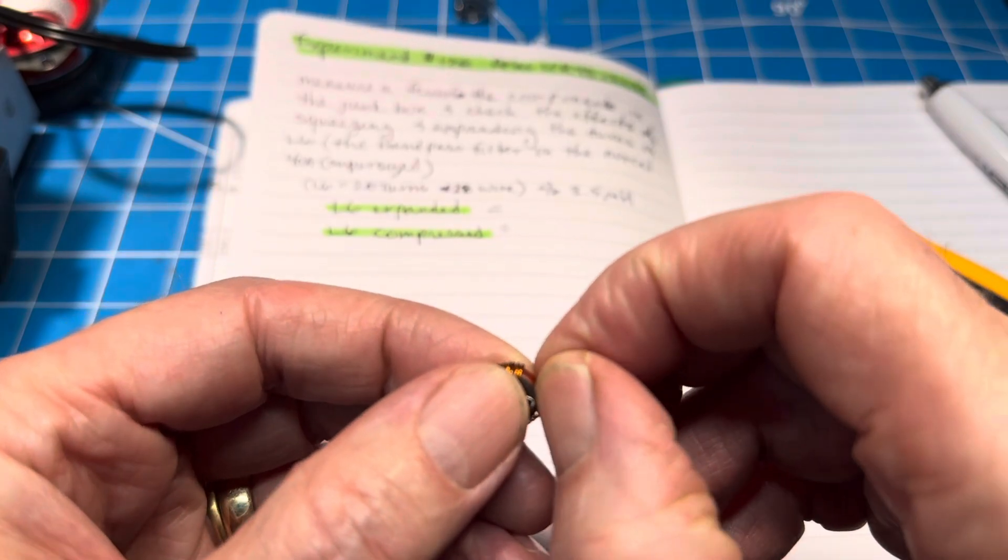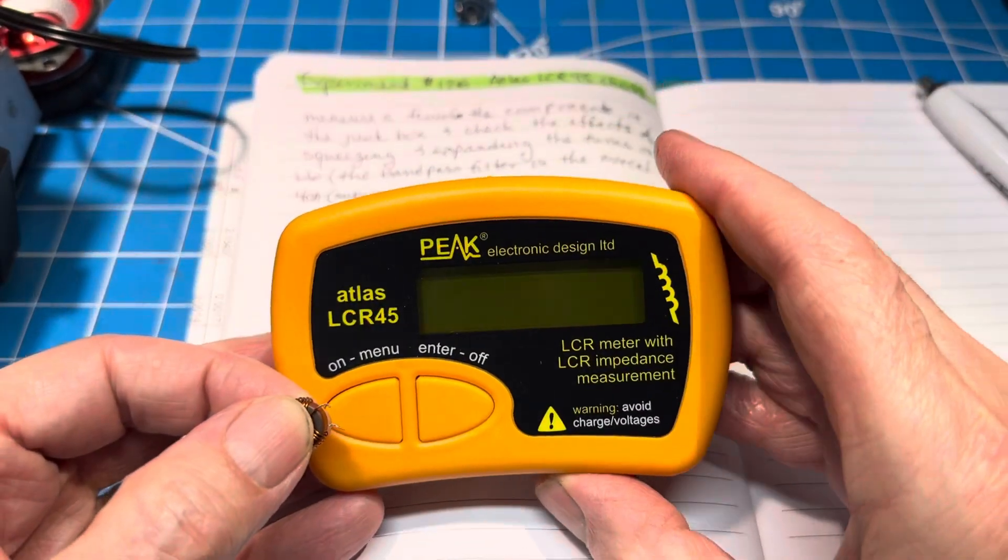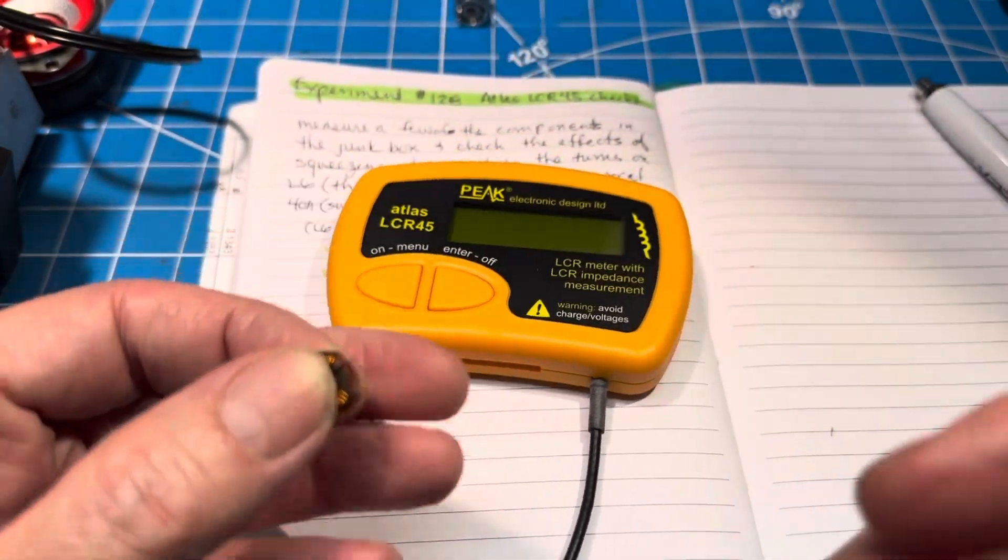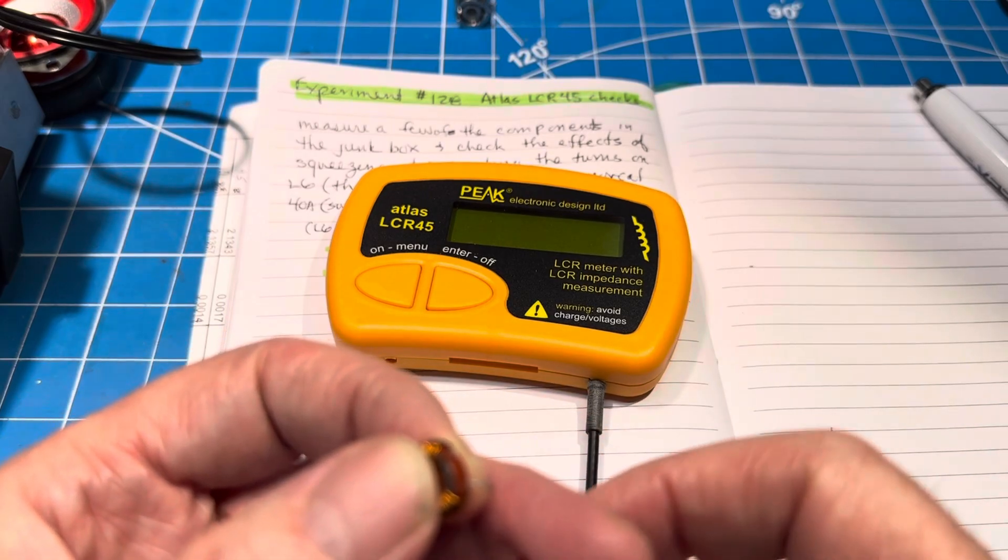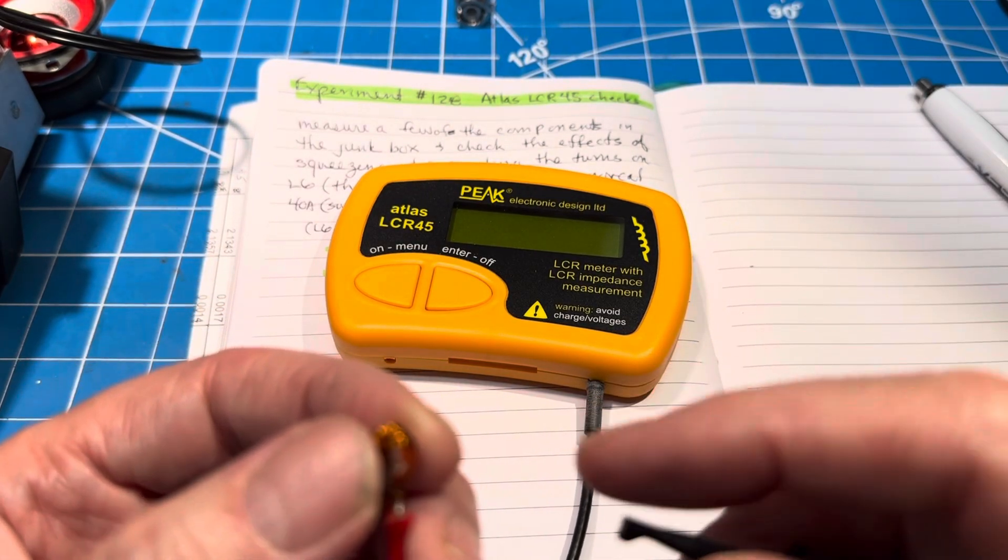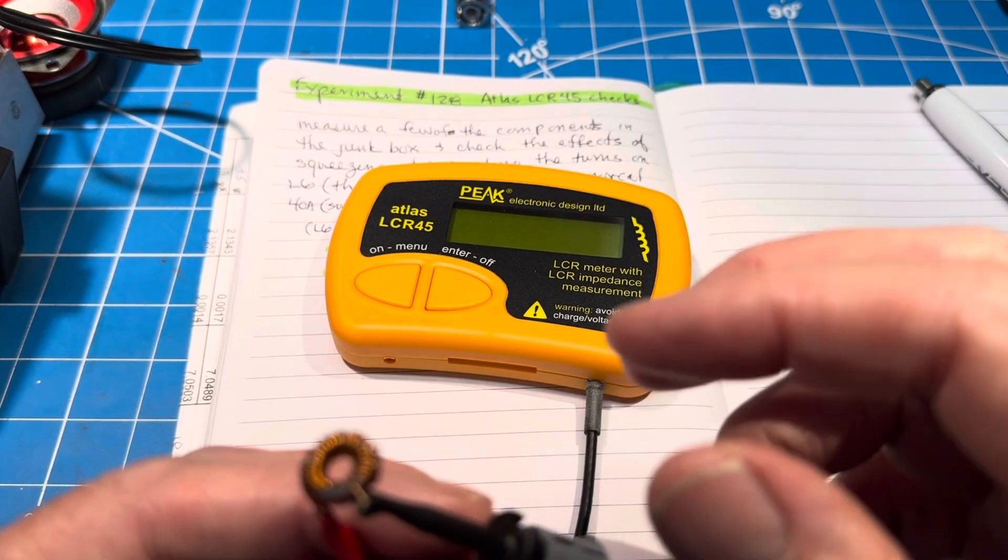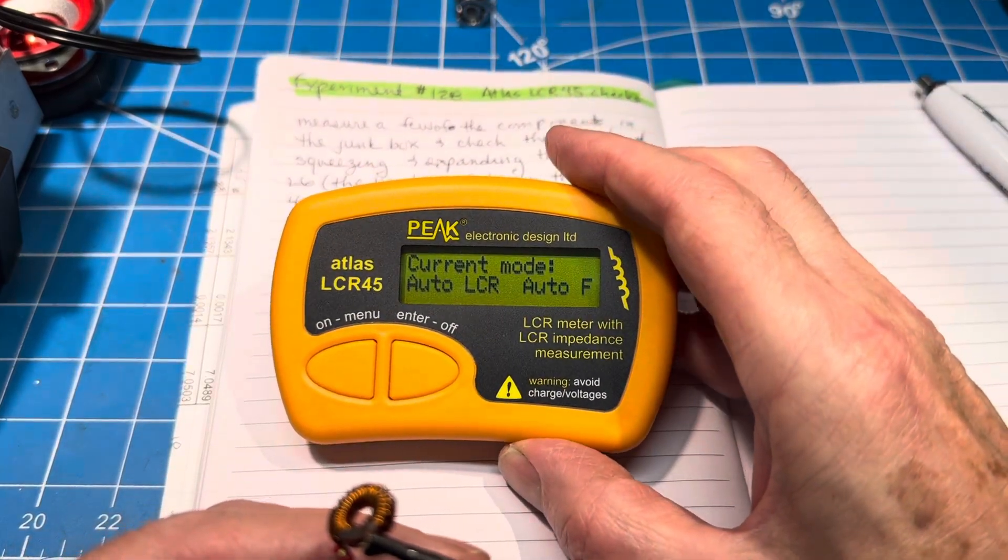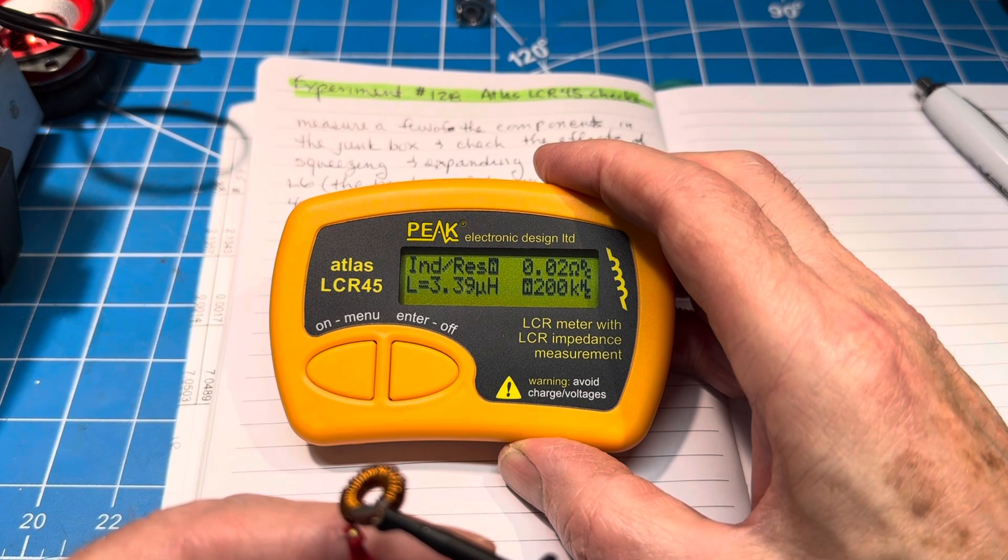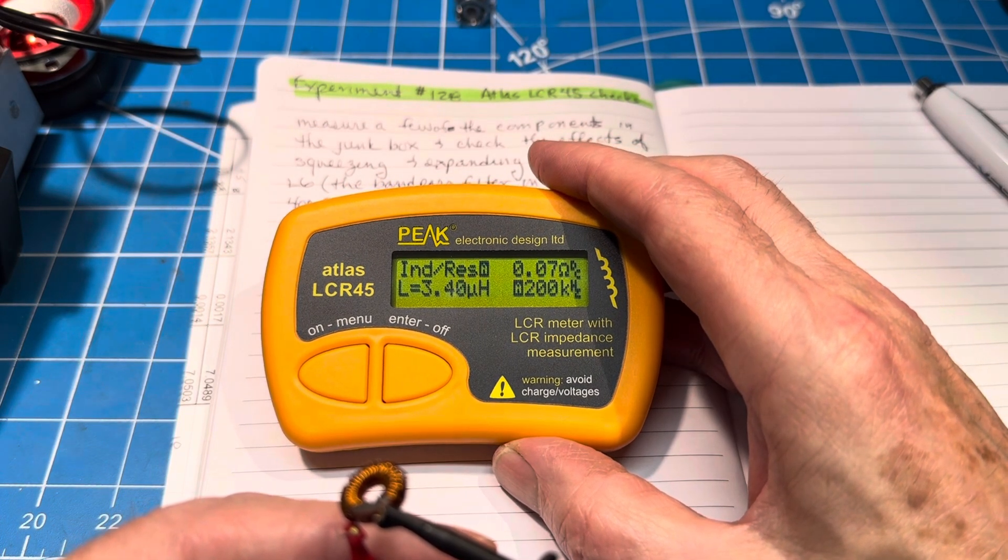In the mail came the Atlas LCR 45, and it is billed to be auto component identification and measurement. We're going to hook up L6 and measure it the way it was in the circuit. We push the button and there we are: 3.4 microhenry, which is pretty close to 3.5.